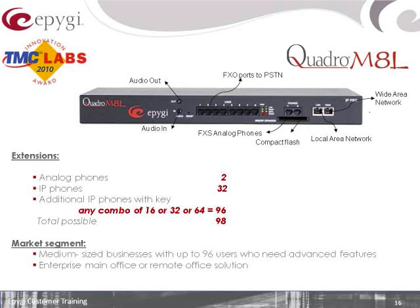The IP phone capacity goes up to 96, and with the two analog phones added in, it's a total of 98 connections. All of this — the base unit starts at just under $2,400. So it's a really good starting price point for your mid-range customers. You can start a company out at roughly 32 users and get them to grow all the way up to just under 100 users, which covers most small to medium-sized offices.